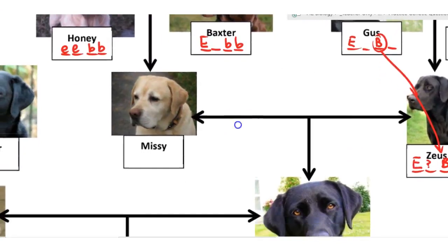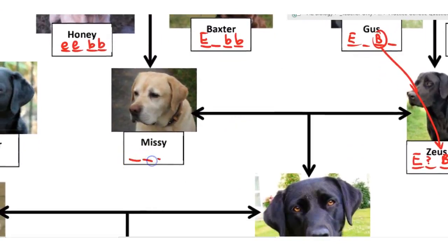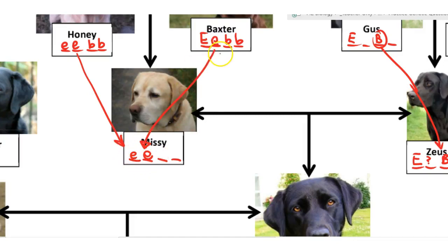Now let's look at Missy. Missy is a golden retriever, so she's recessive for E — homozygous little e little e. One of those little e's came from Roxy, but she had to get the other little e from Baxter, which means Baxter must have a little e — so we now know Baxter's full genotype by looking at his offspring. Missy also has a brown nose, meaning she's recessive for B, which is consistent with what Honey and Baxter could give her.